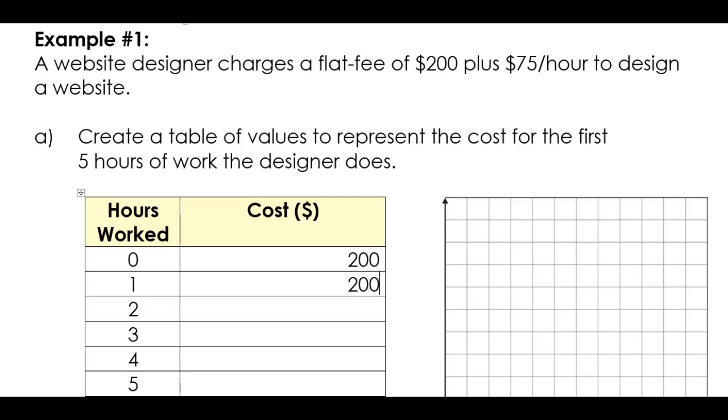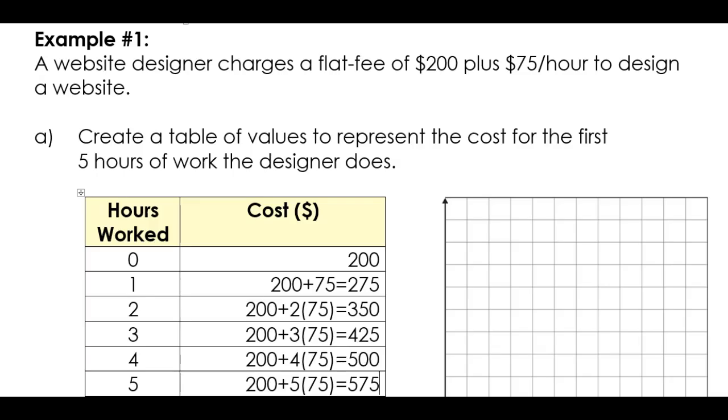So after one hour, I know that he's going to charge the $200 plus the $75 for the hour. And that's going to give a total of $275. The next is going to be $200 plus two times the $75, and that's going to give me $350 and so on and so forth. So we've gone ahead and filled in the table of values for you. But you'd go about this the same way if you were solving a problem. Just use the information in the description to help you fill in the relevant information in your table of values.